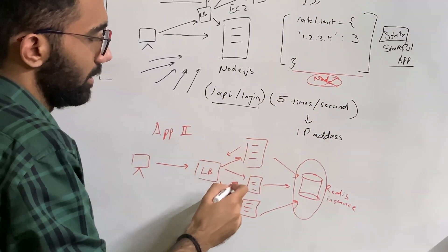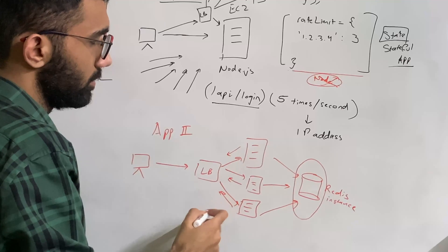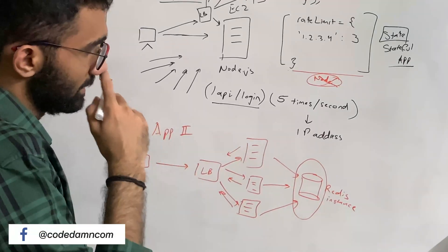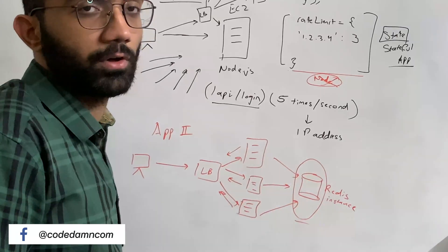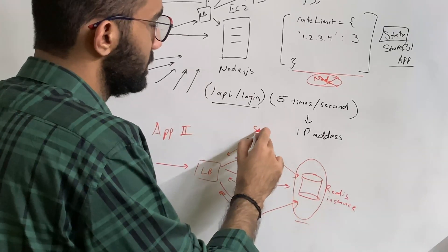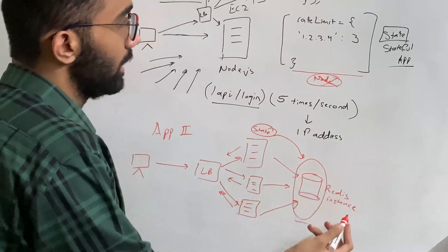But Redis over here can act as a single source of truth for your state. So you take your state object over here, and you convert that into Redis key value.